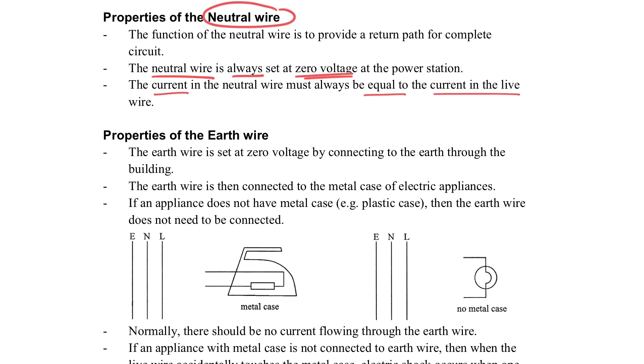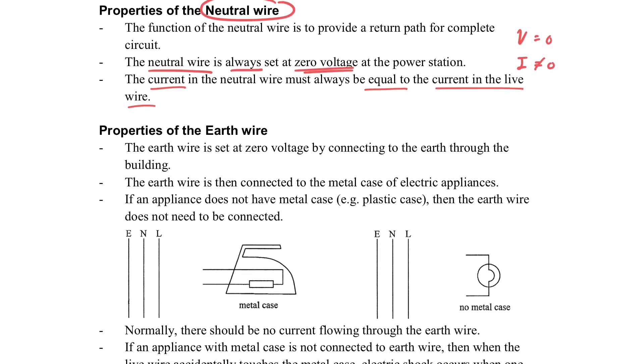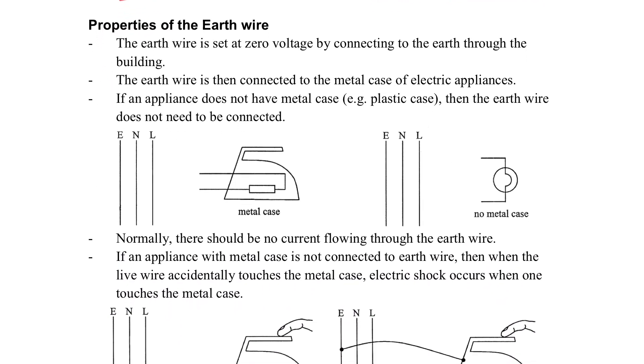It is always set at zero voltage at the power station because it is already earth. The current in the neutral wire, you should note, is not zero. The voltage is zero, the potential is zero. However, the current is not zero because the current still passes through it. This is important.